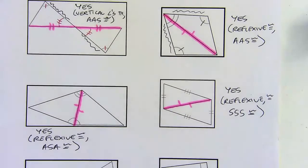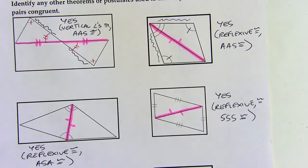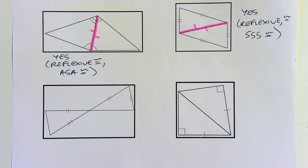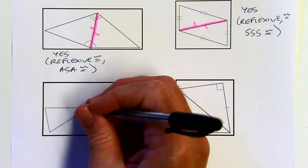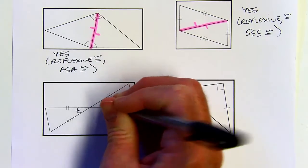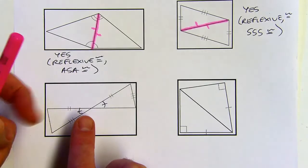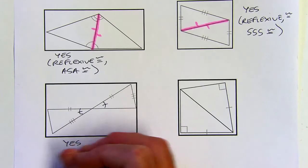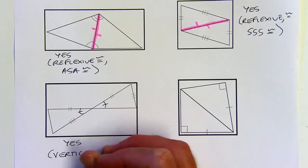You'll see reflexive property and vertical angles theorem used all the time to find missing pieces. Once in a while, you'll see alternate interior angles if you've got some parallel sides, but reflexive and vertical angles come up all the time. This next one has vertical angles, and then we've got enough for SAS — two sides and an included angle. Vertical angles theorem and SAS.